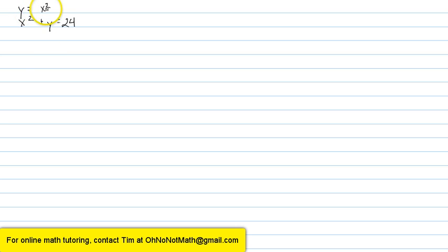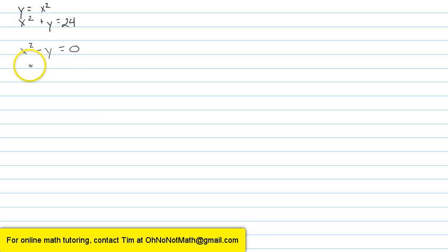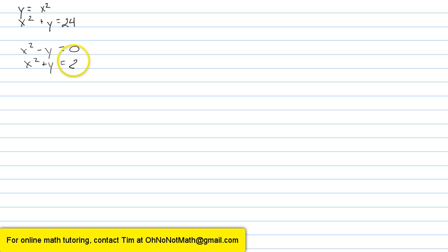I'll start by rewriting the first equation, y equals x squared, as x squared minus y equals 0. And then I'll write the second equation: x squared plus y equals 24.